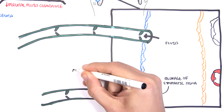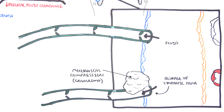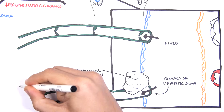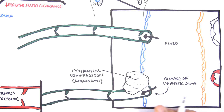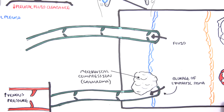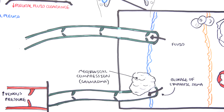If there is an obstruction compressing the lymphatic drainage, this means fluid cannot be drained. An example is if you have a granuloma in the lung compressing against the lymphatics. Another example is if there is an increase in venous pressure. Because the lymph vessels eventually drain into the venous system, a buildup of pressure in the veins means buildup of pressure in the lymphatics, and so the lymphatic system cannot drain adequately.